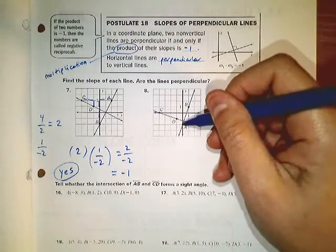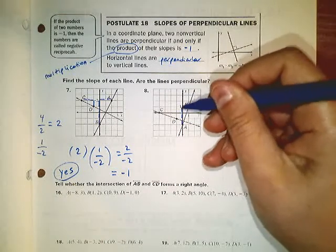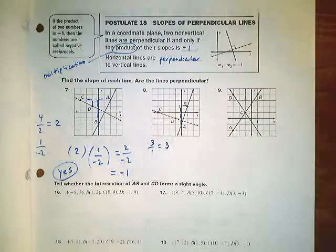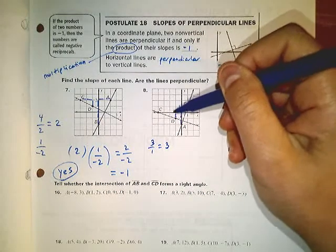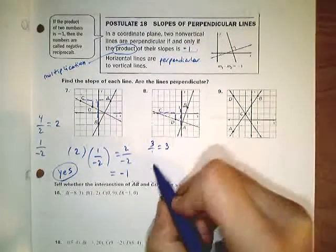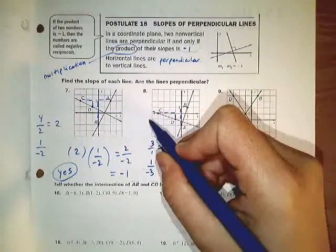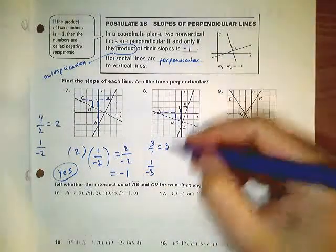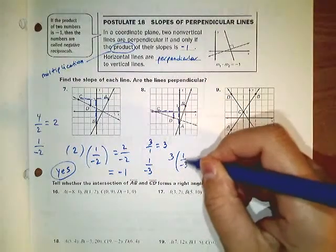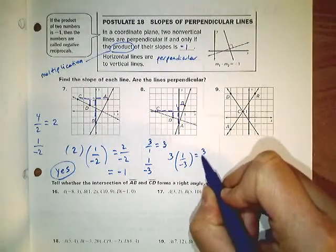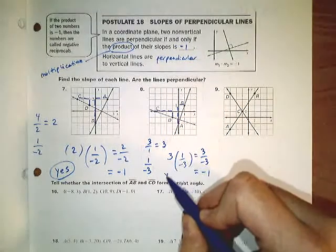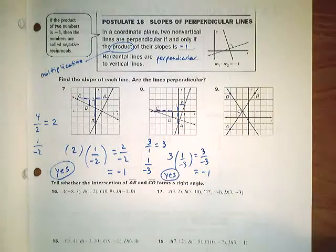Number 8: this line moves up 1, 2, 3 units for every 1 unit to the right, so the slope is 3 over 1, or just 3. On this other line, I'd move up 1 unit for every 1, 2, 3 units to the left. Left is a negative movement, so that's positive 1 for the vertical and negative 3 for the horizontal. If I take these two slopes — 3 for the first line and 1 over negative 3 for the second — and multiply them together, the product is negative 1. So I've demonstrated that they are perpendicular.